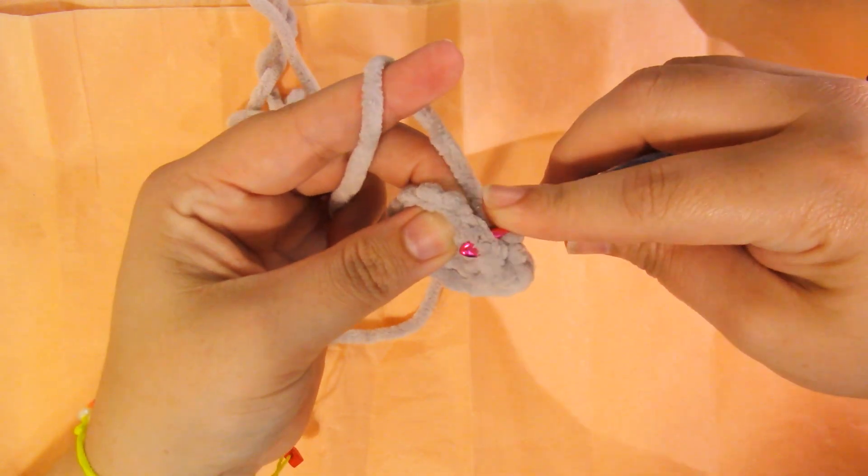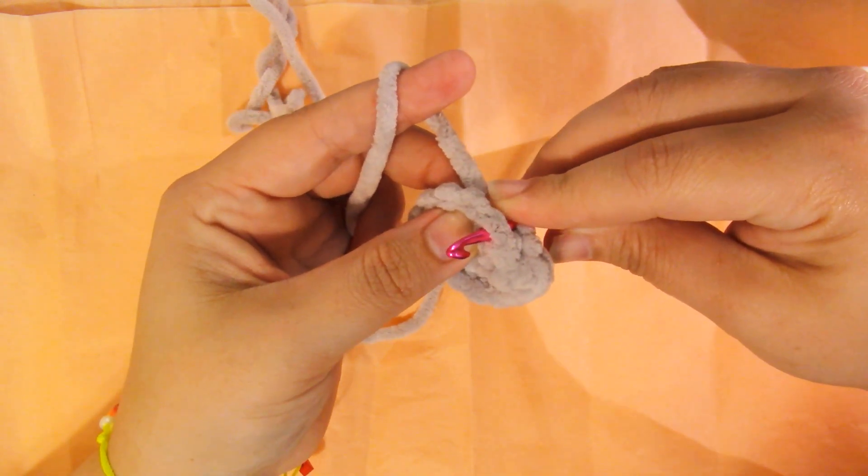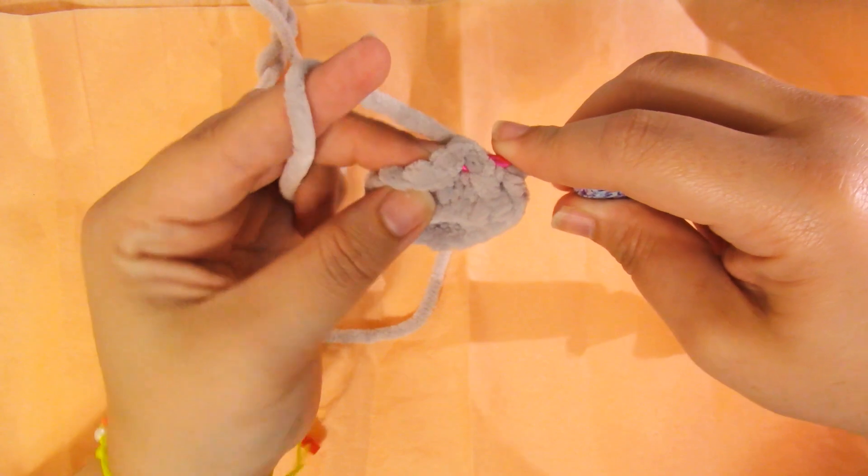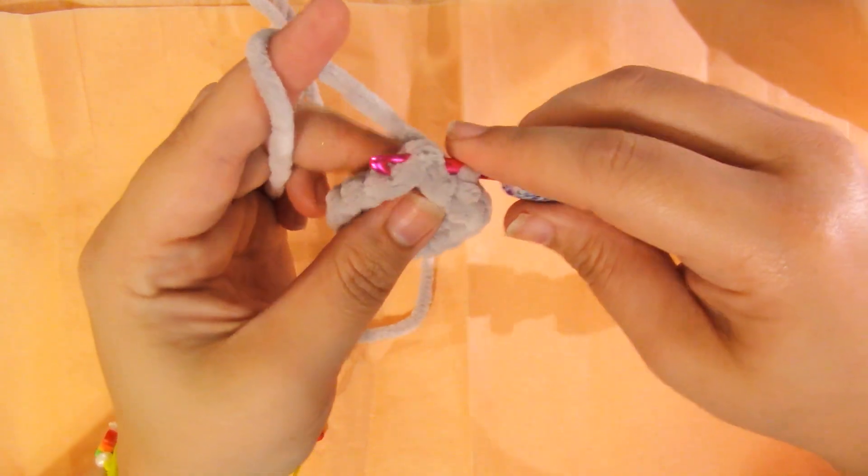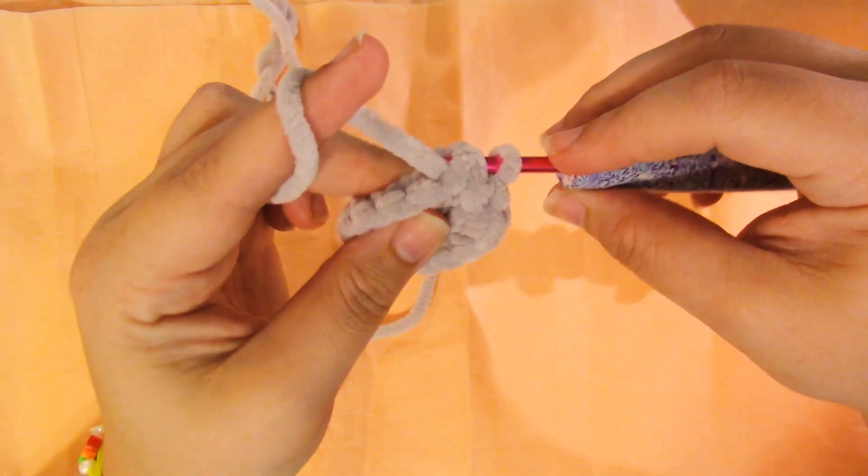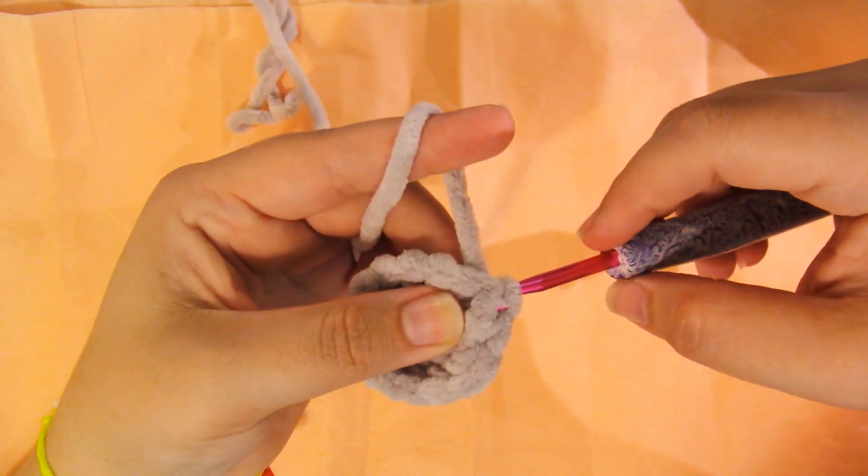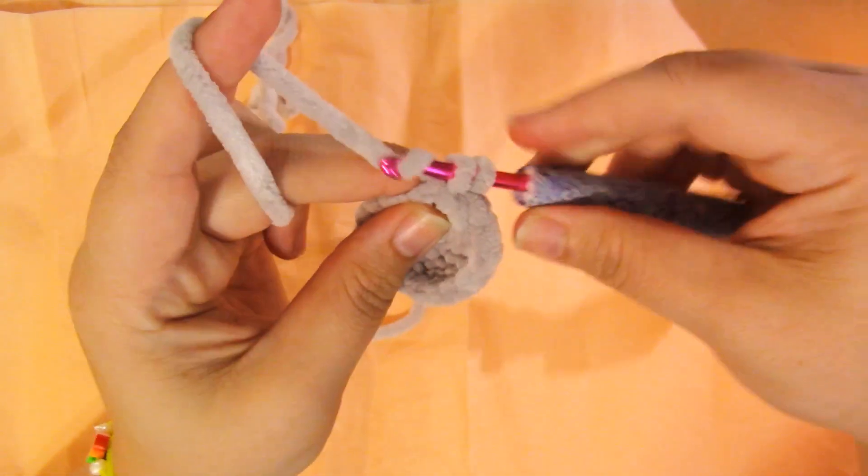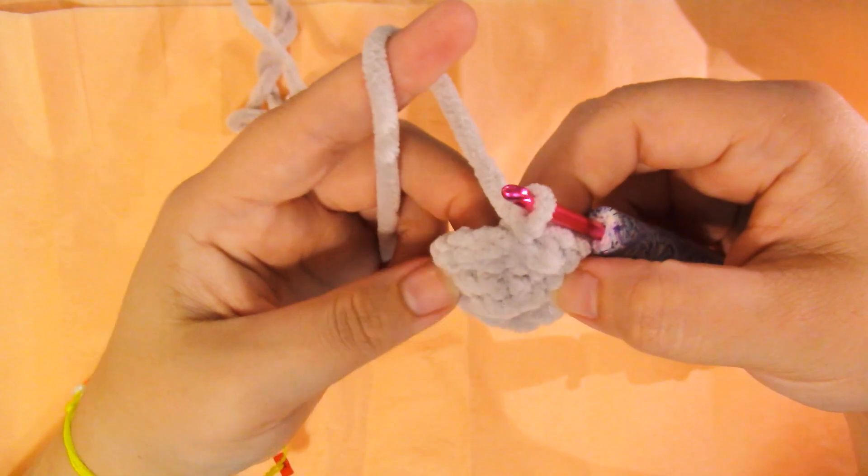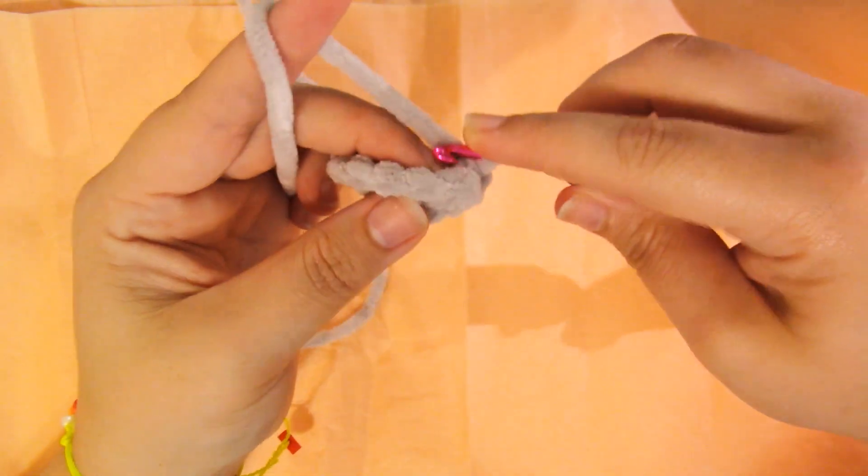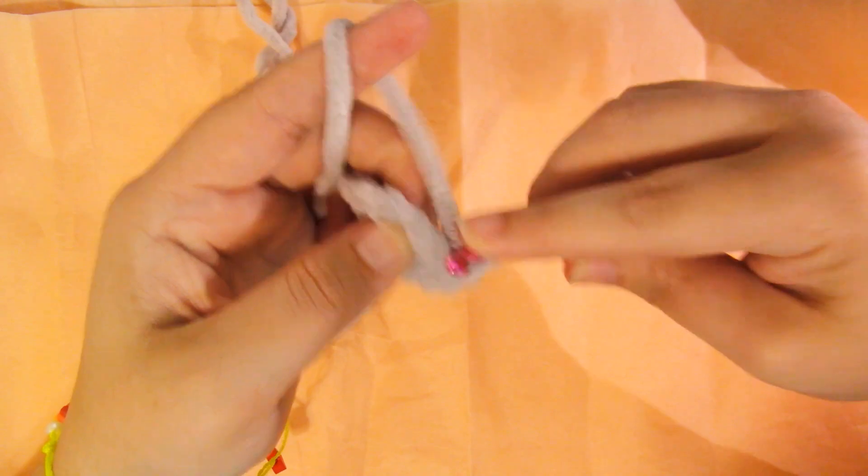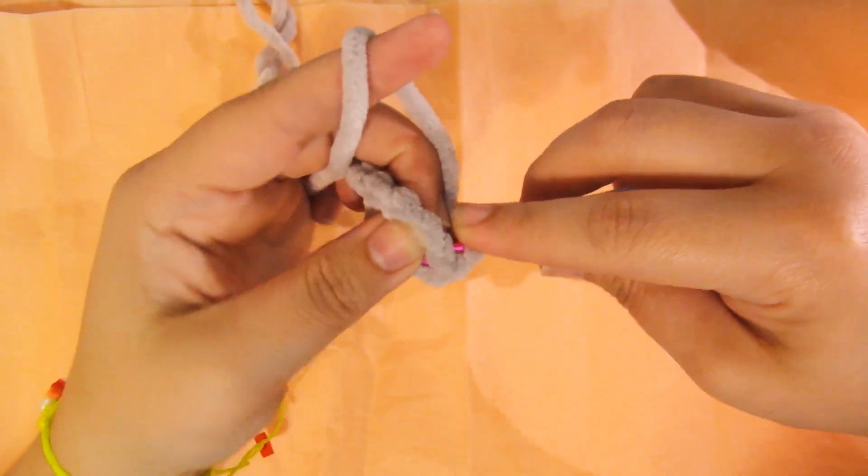So one more time: we go towards the back, come out forward, enter the next space, grab your yarn, pull it, and finish up your single crochet. I'm going to work a few more stitches so that you see what—oops.